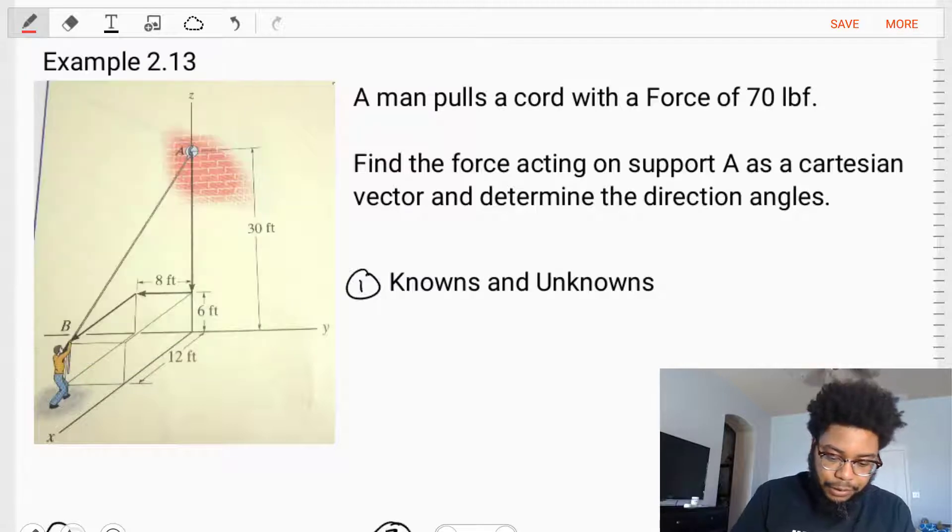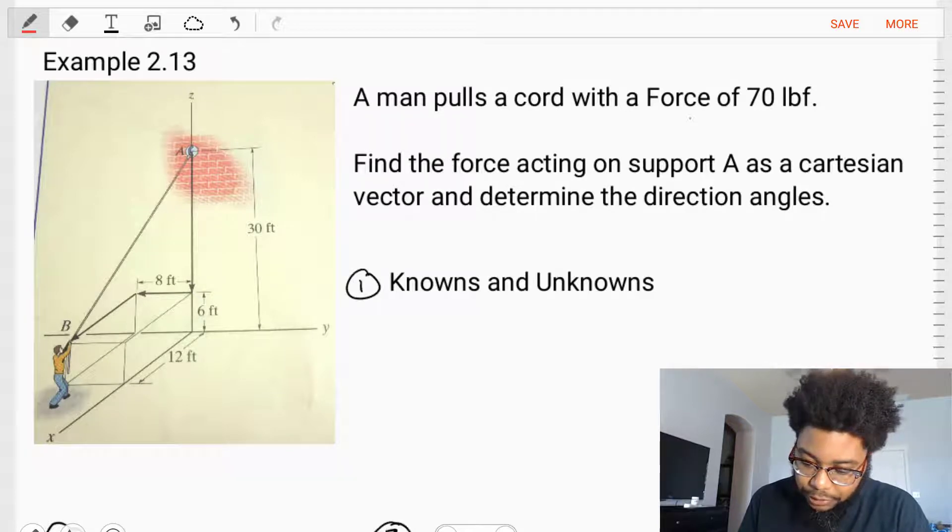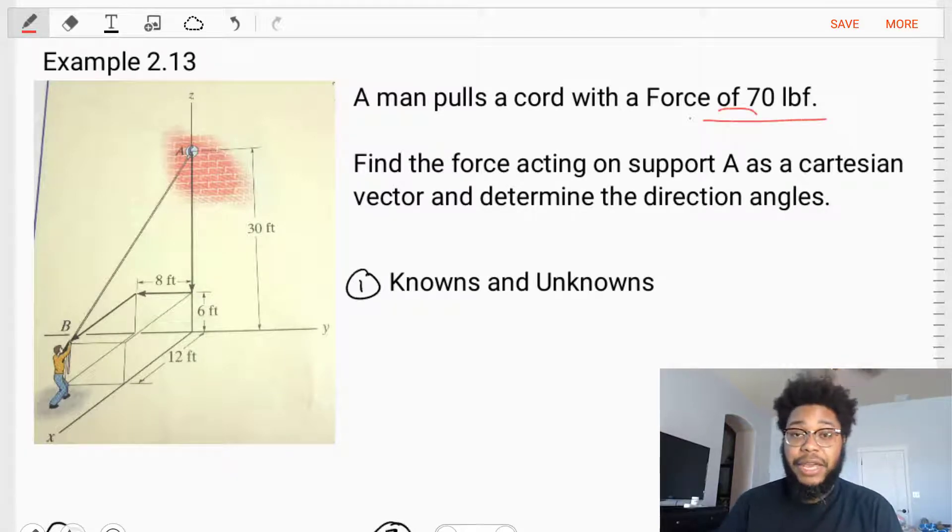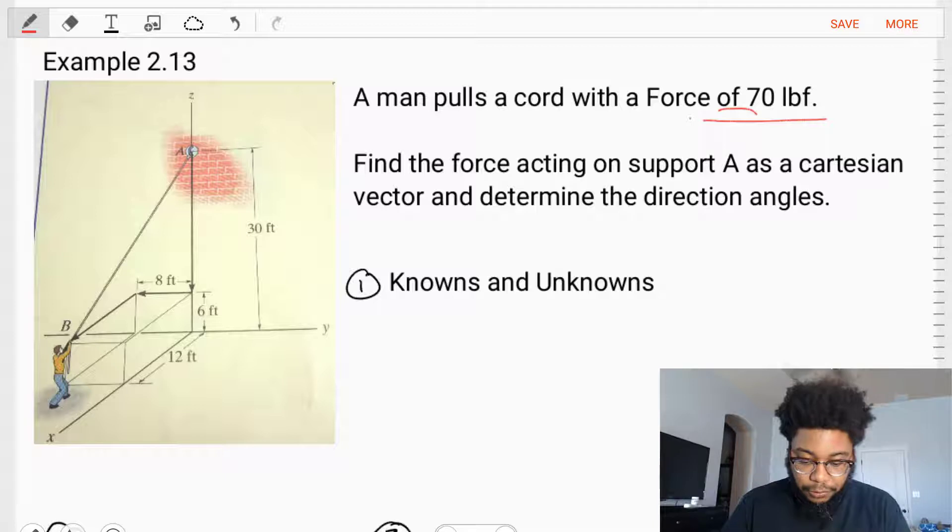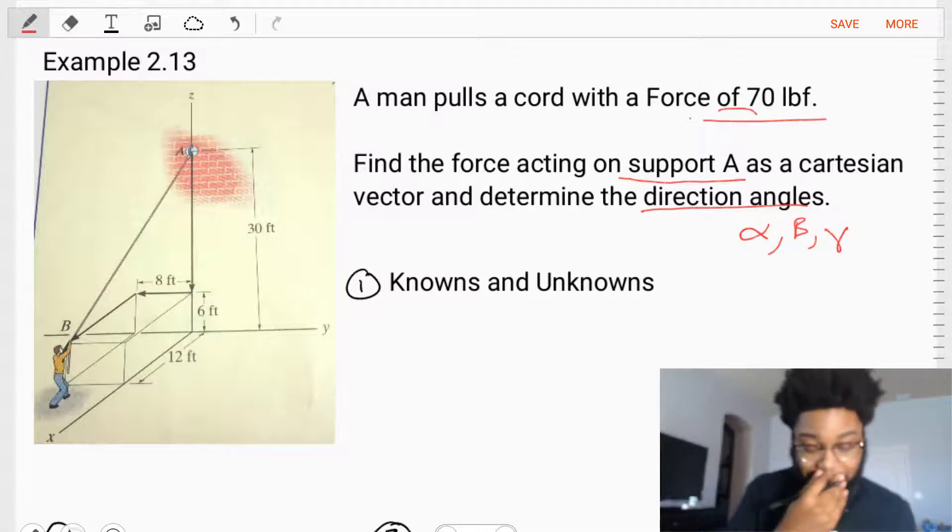In this example, a man pulls a cord with a force of 70 pounds. We're asked to find the force acting on support A as a Cartesian vector and determine the direction angles, that is the alpha, beta, gamma angles of that vector.